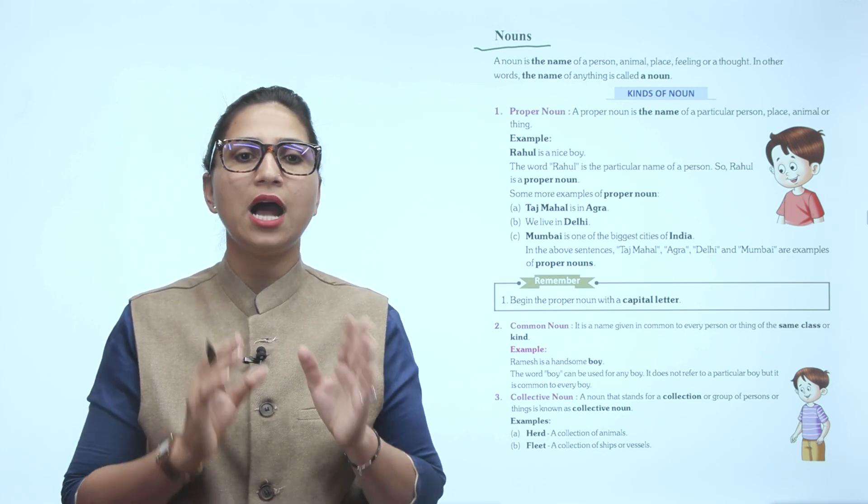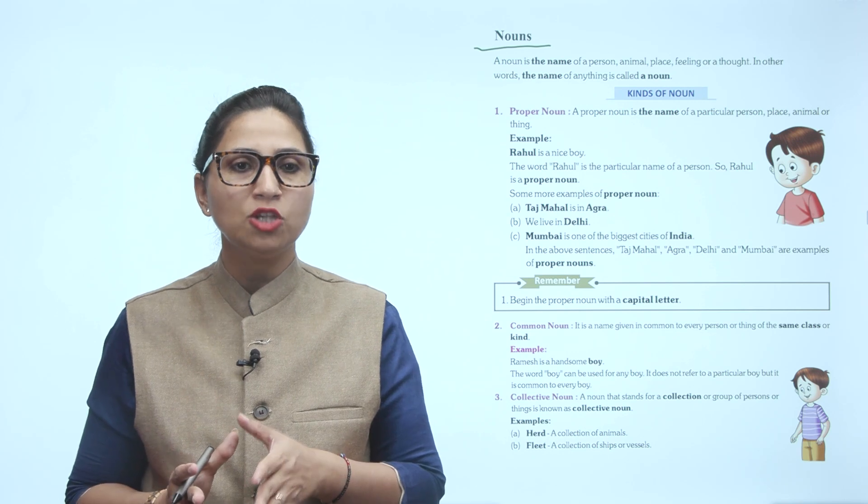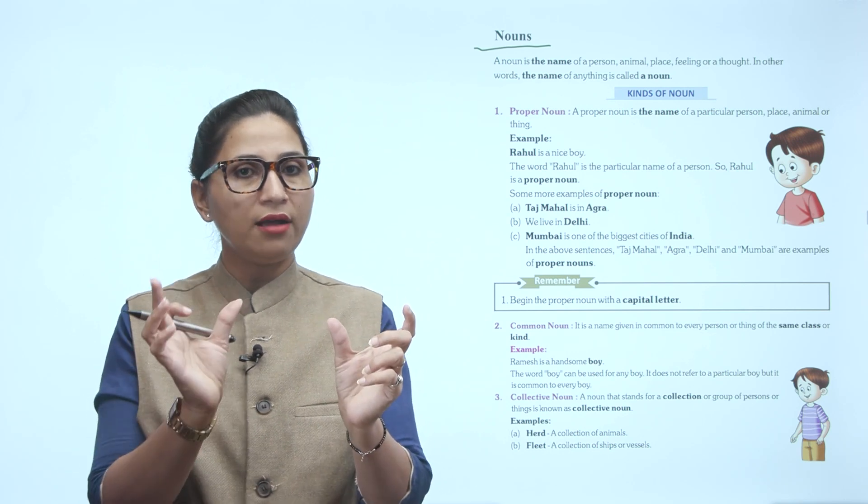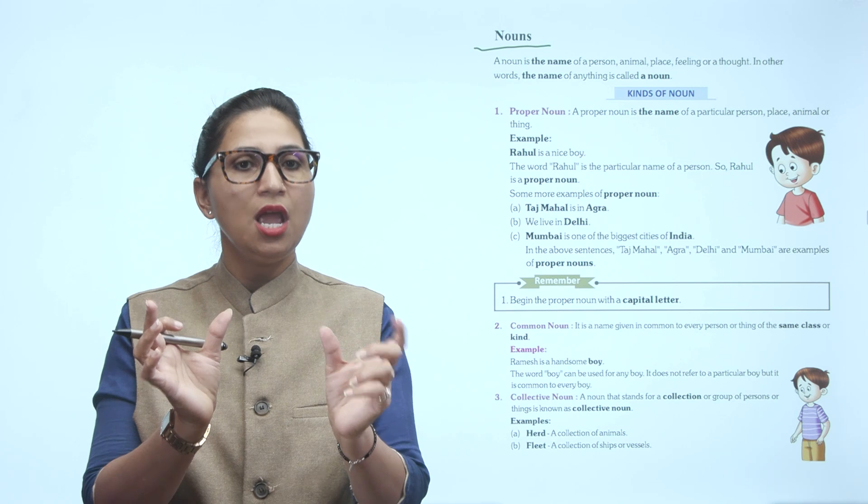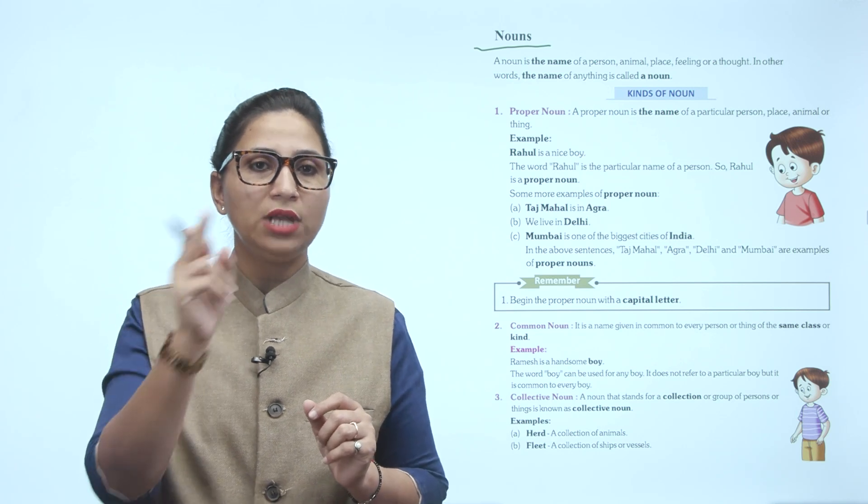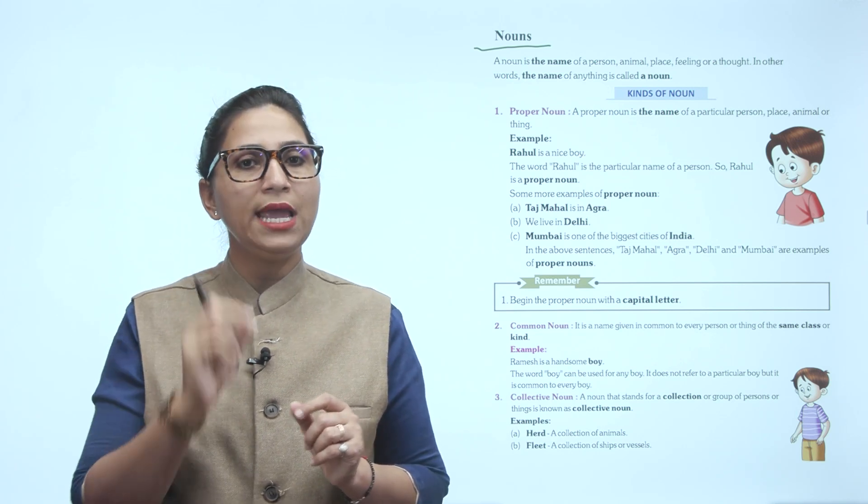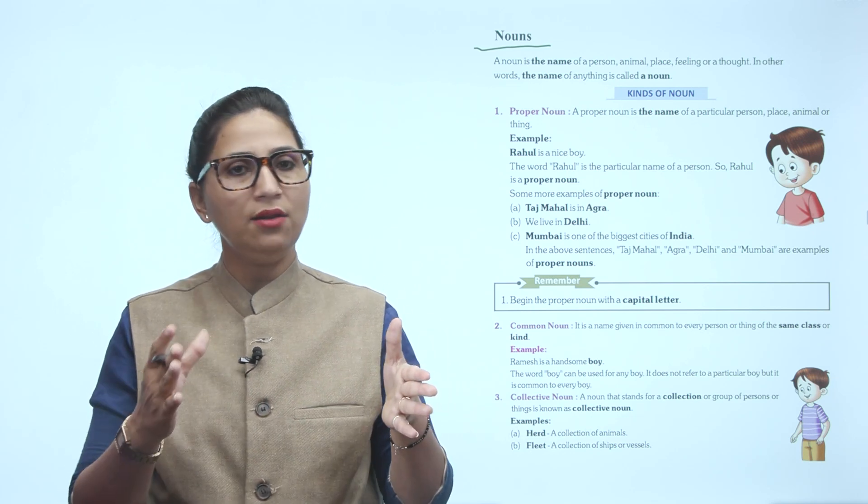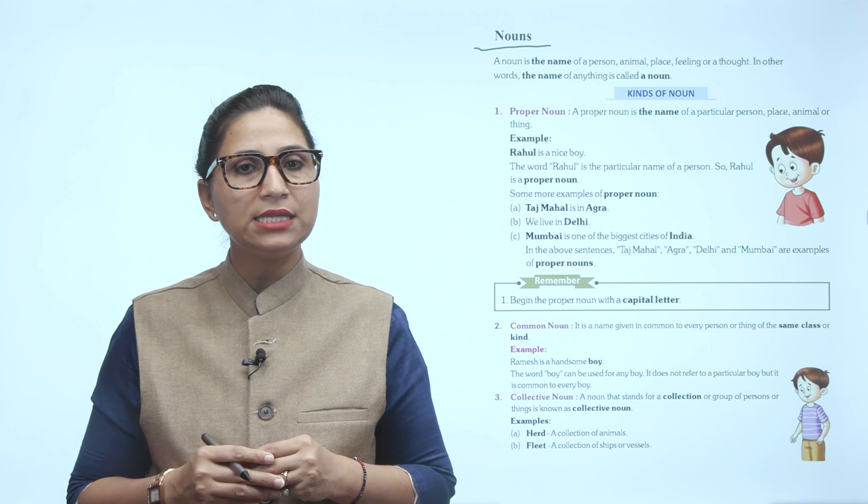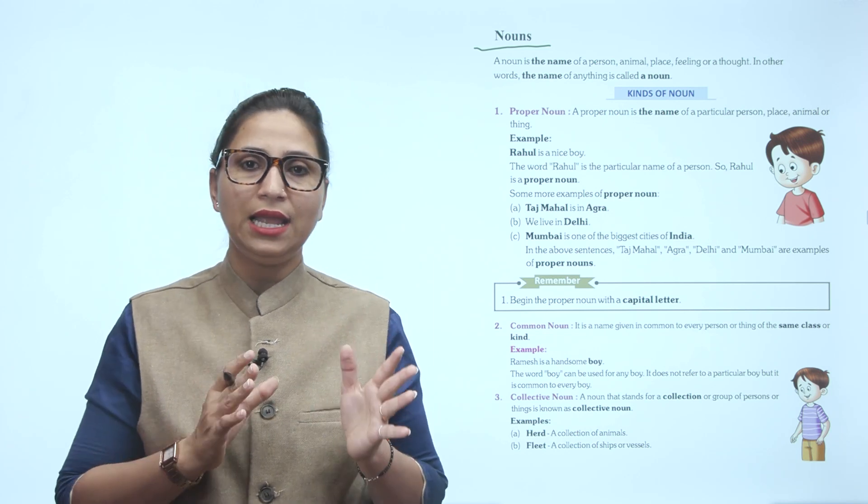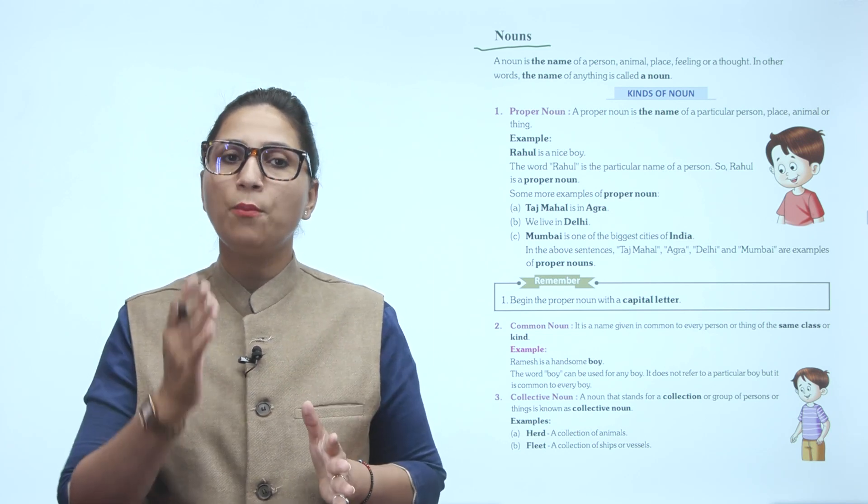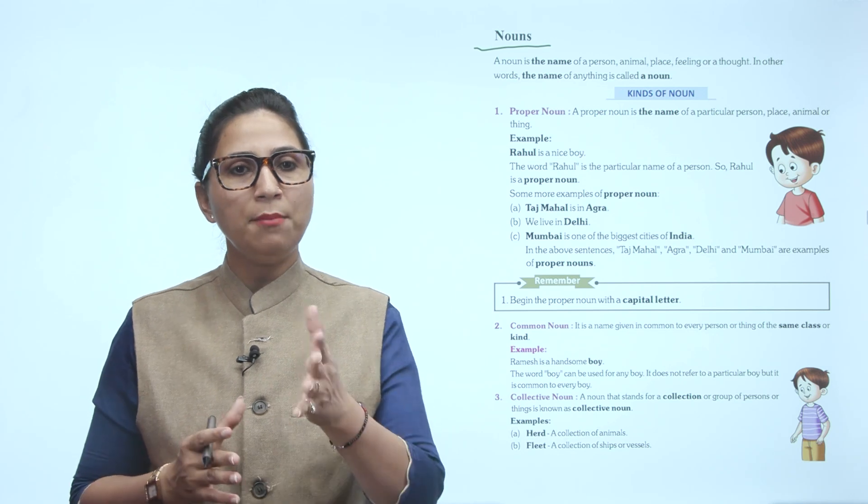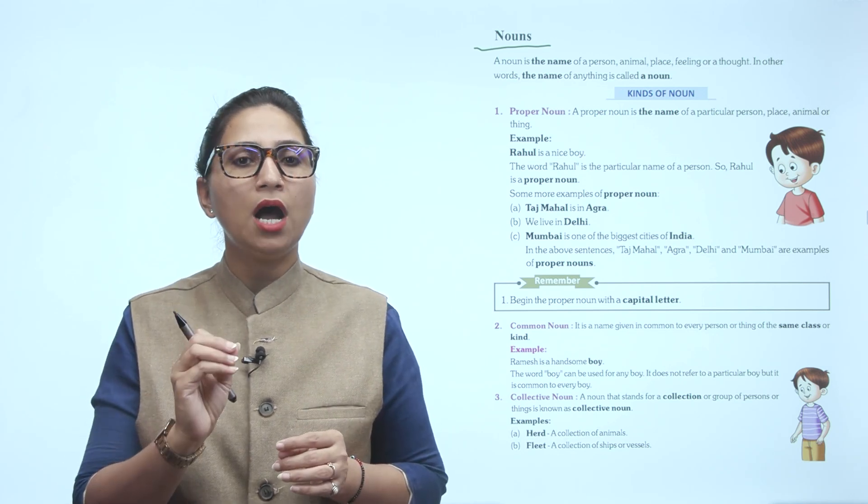More examples: Taj Mahal is in Agra. We live in Delhi. Mumbai is one of the biggest cities of India. In these sentences, Taj Mahal, Agra, Delhi, Mumbai, and India are examples of proper nouns. Remember, always begin a proper noun with a capital letter.